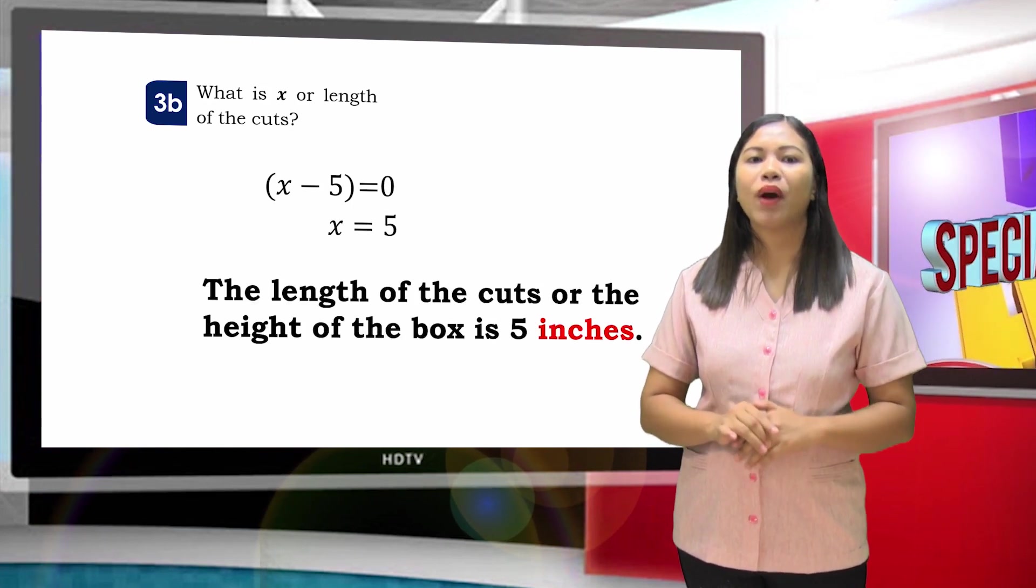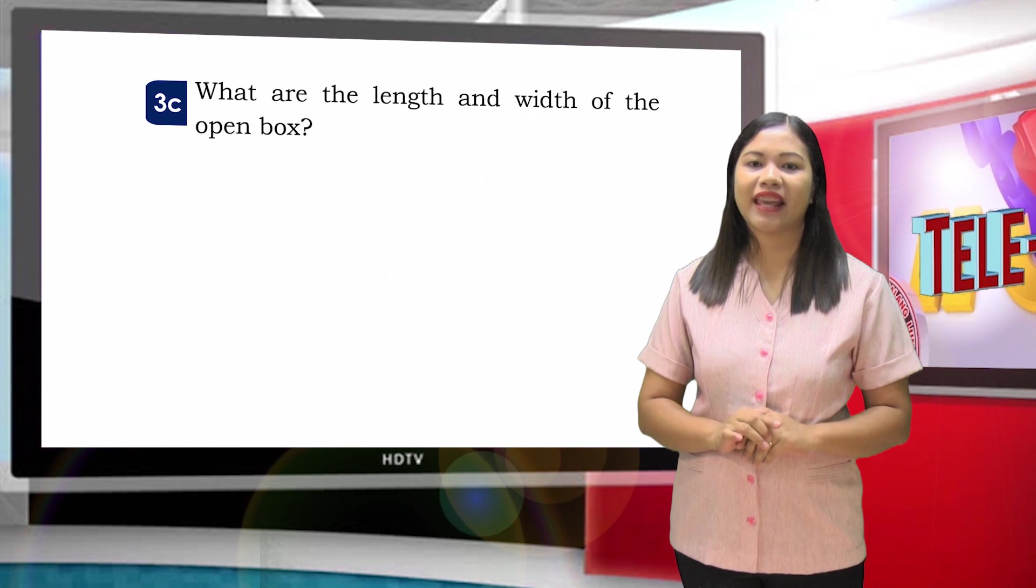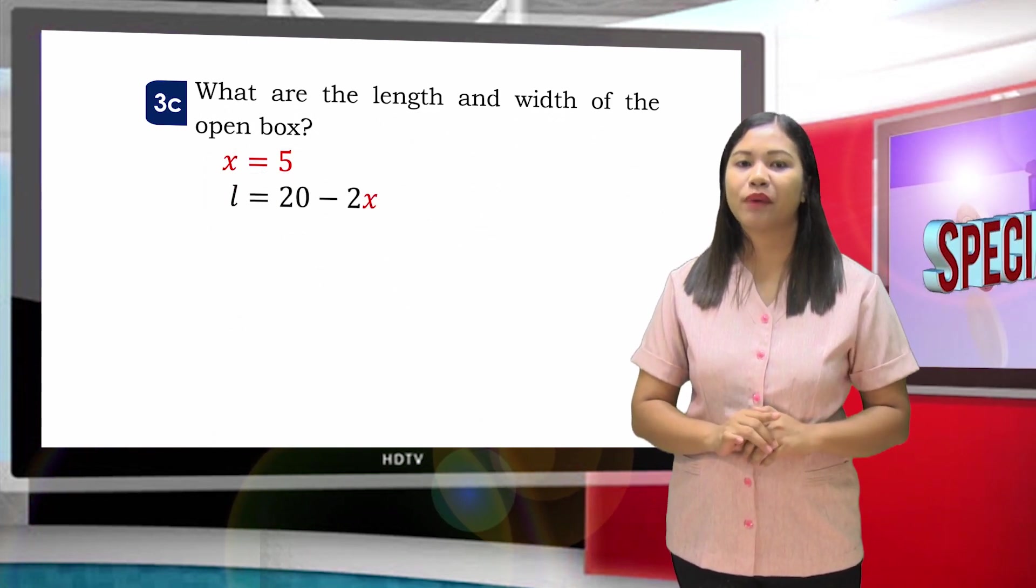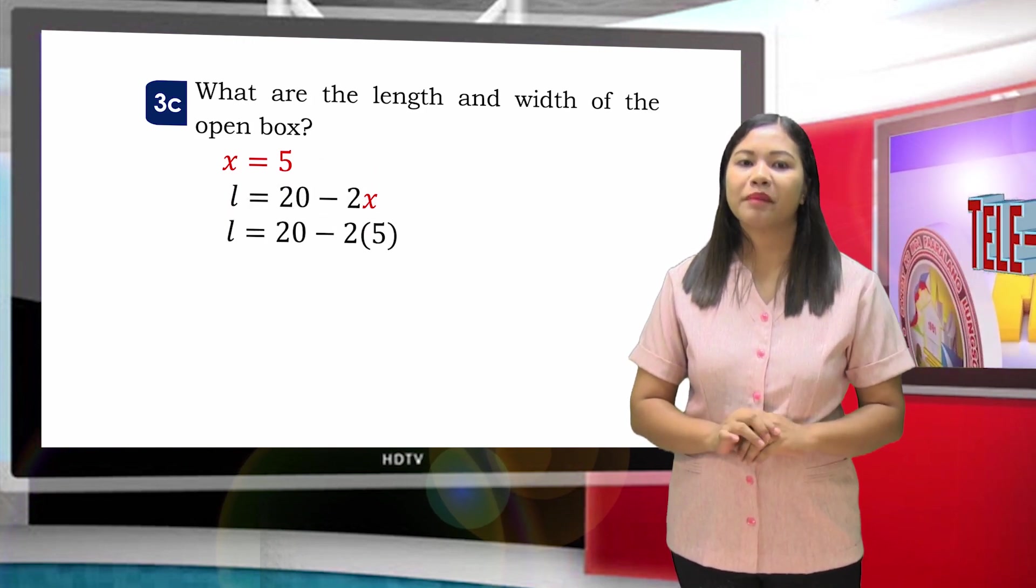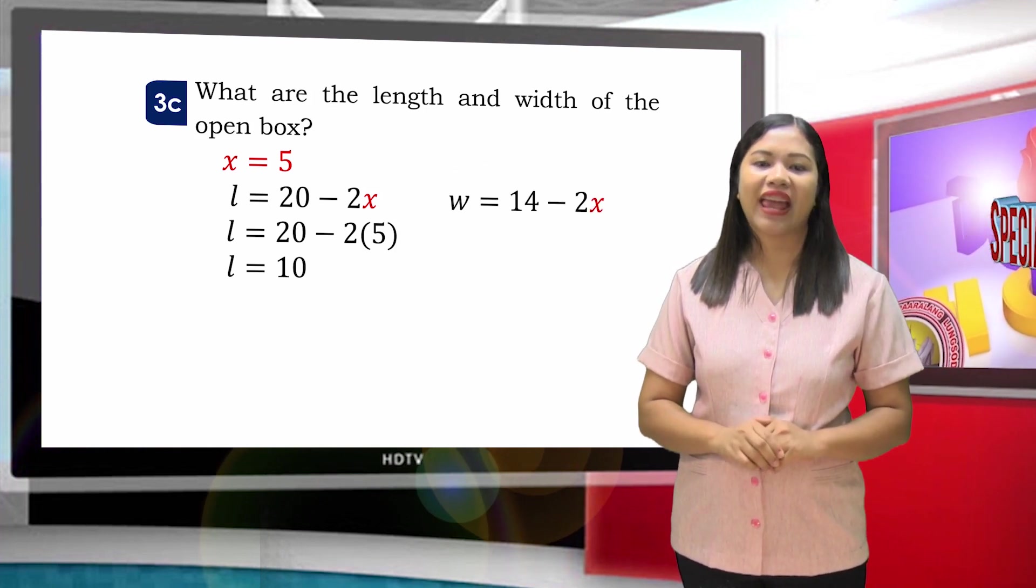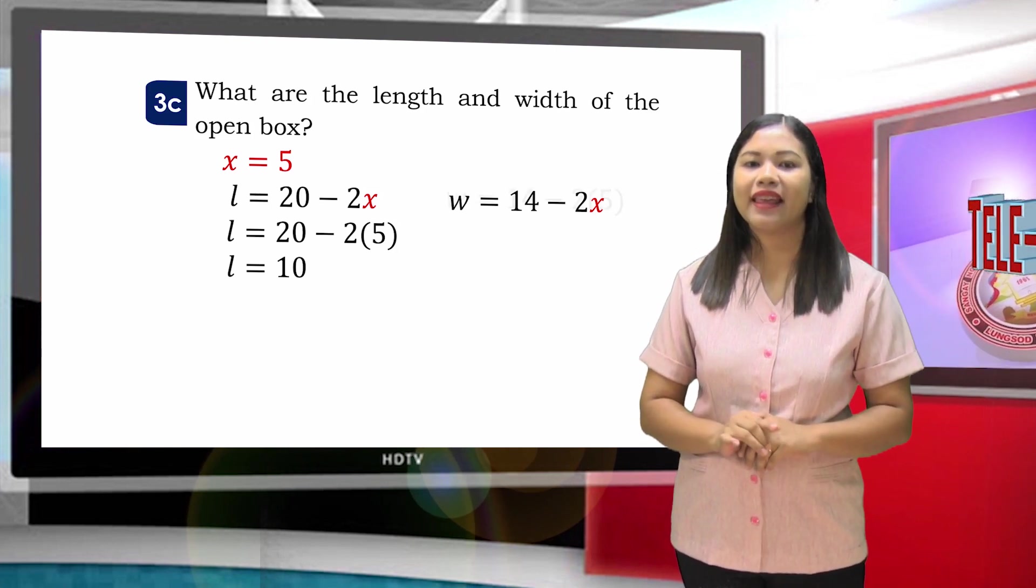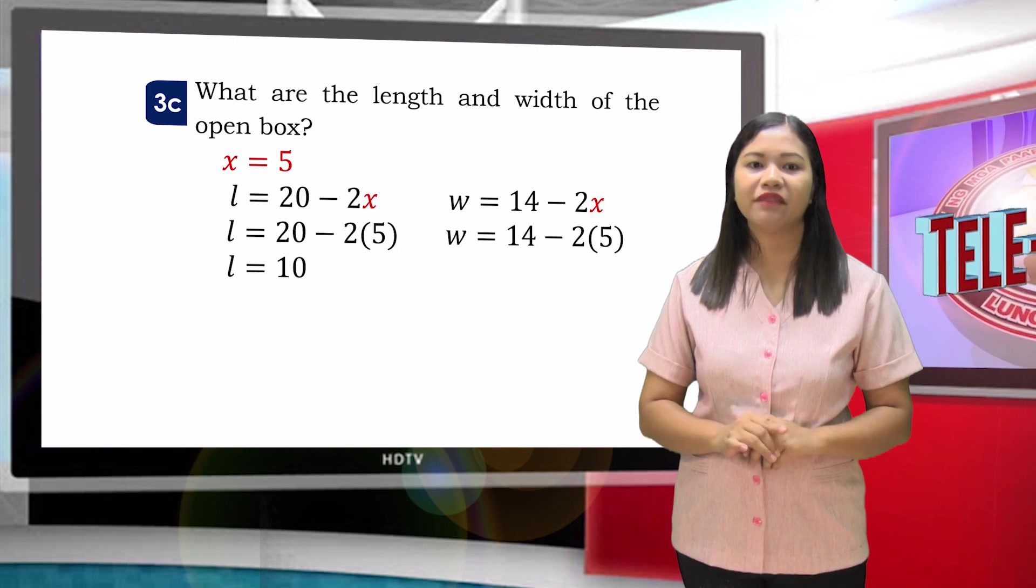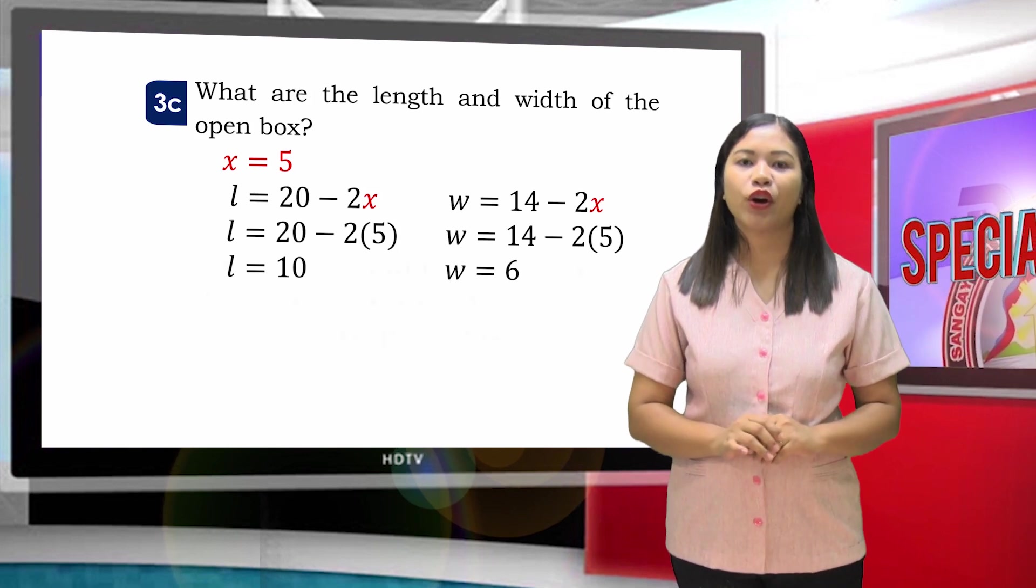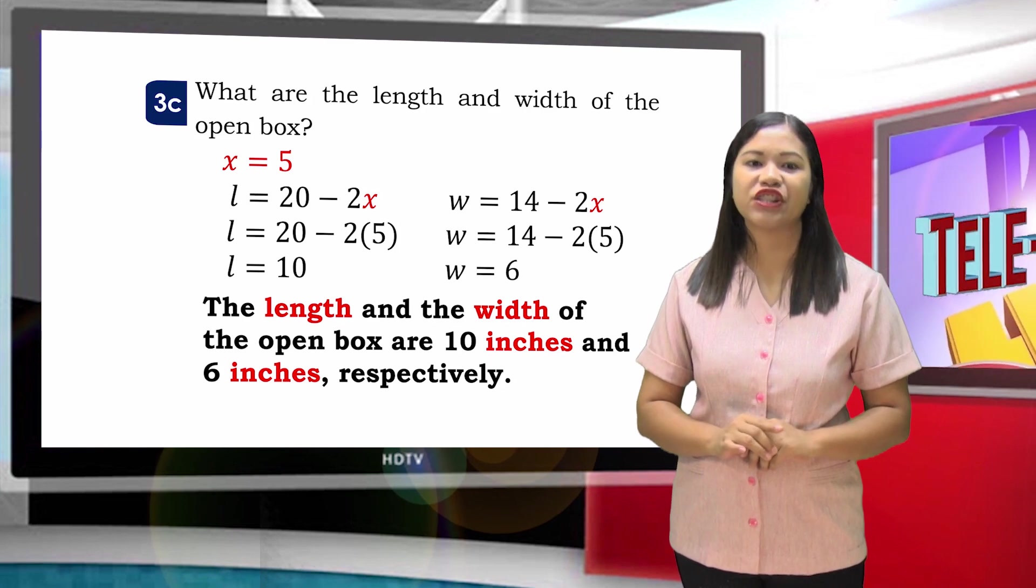Last question: What are the length and width of the open box? Substitute the value of X to get the length. Since L = 20 - 2X, then L = 20 - 2(5). Performing the indicated operation, L = 10. Substitute the value of X to get the width. Since W = 14 - 2X, then W = 14 - 2(5). Performing the indicated operation, W = 6. Therefore, the length and the width of the open box are 10 inches and 6 inches respectively.